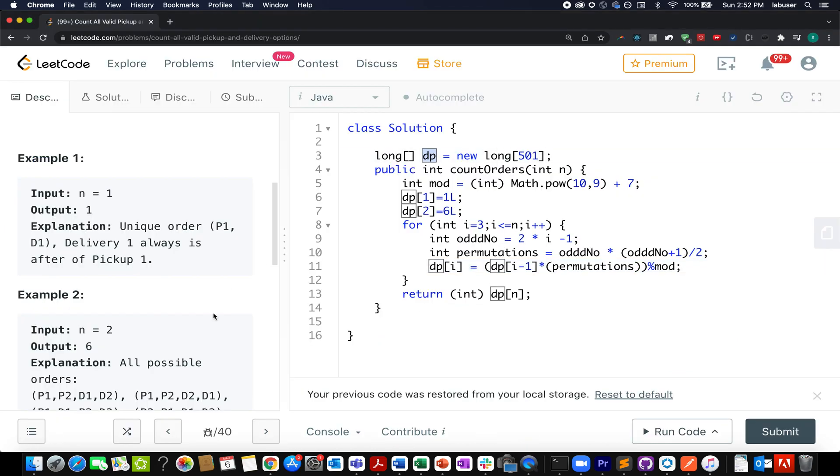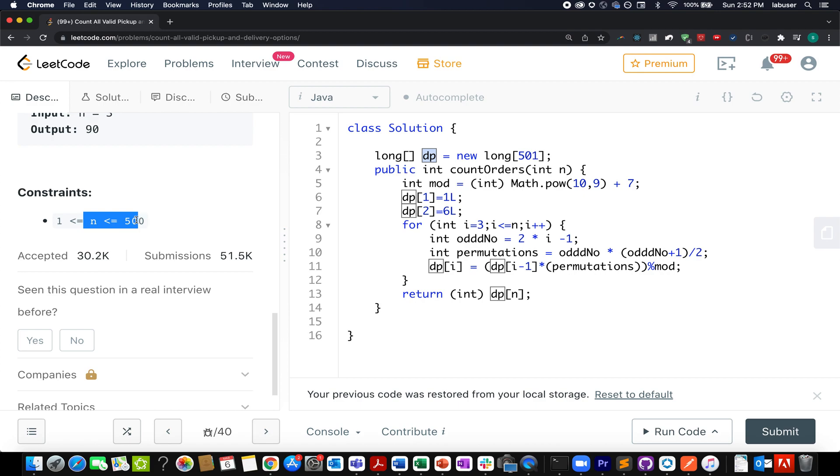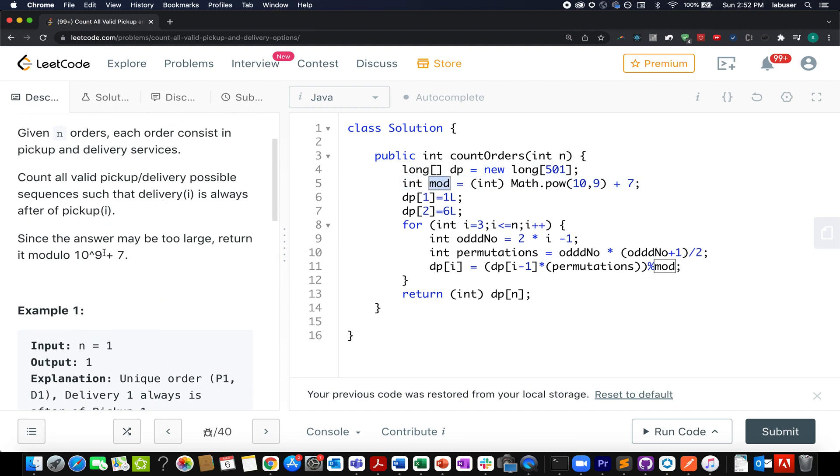So let's quickly hop onto it. Here I've created a DP array and in the question, it was specified that the value of N will lie up till 500. As a result of it, I have taken the array of size 501. And I should have written this here instead of there. I have created a mod variable because in the question it's asked to take the mod of 10 raised to nine plus seven. I go ahead and write the default values. The answer that we have computed for the first location and the second location, and starting from i equals to three, I go and build the solution up till i equals to N. I go and identify that odd number using the formula two into i minus one. I count the permutations. How do I do that? It's again very simple: odd number into odd number plus one by two. And I simply multiply this value with the previously computed value at i minus one index.